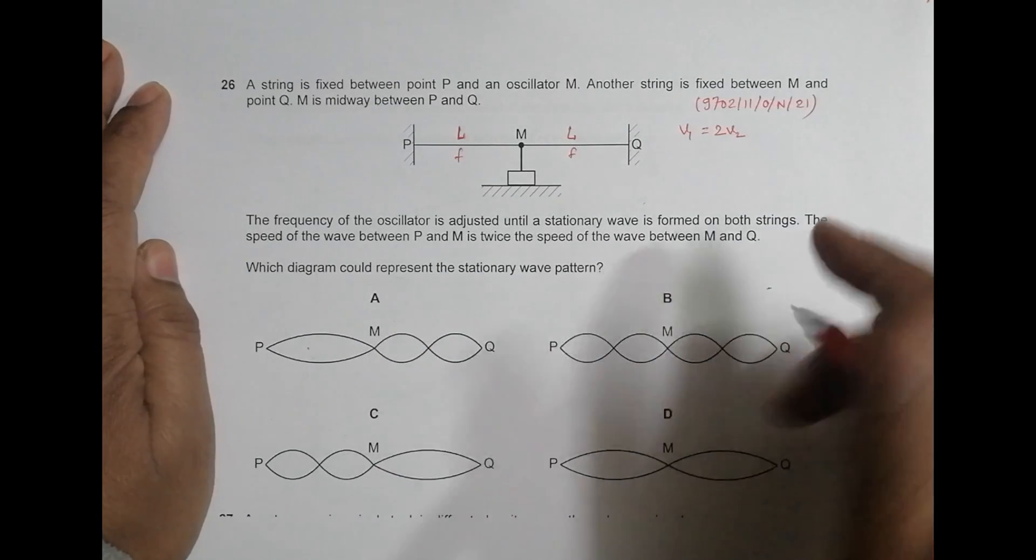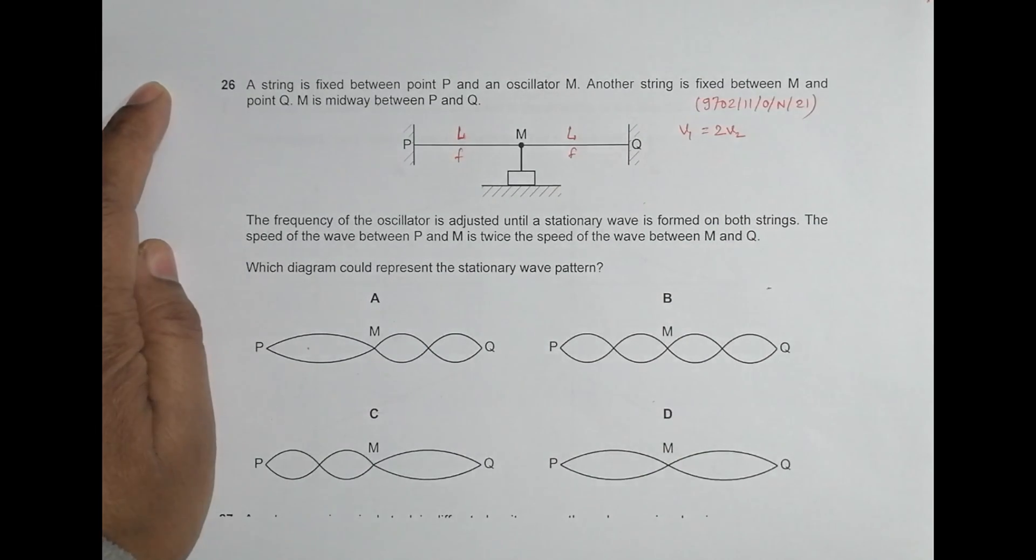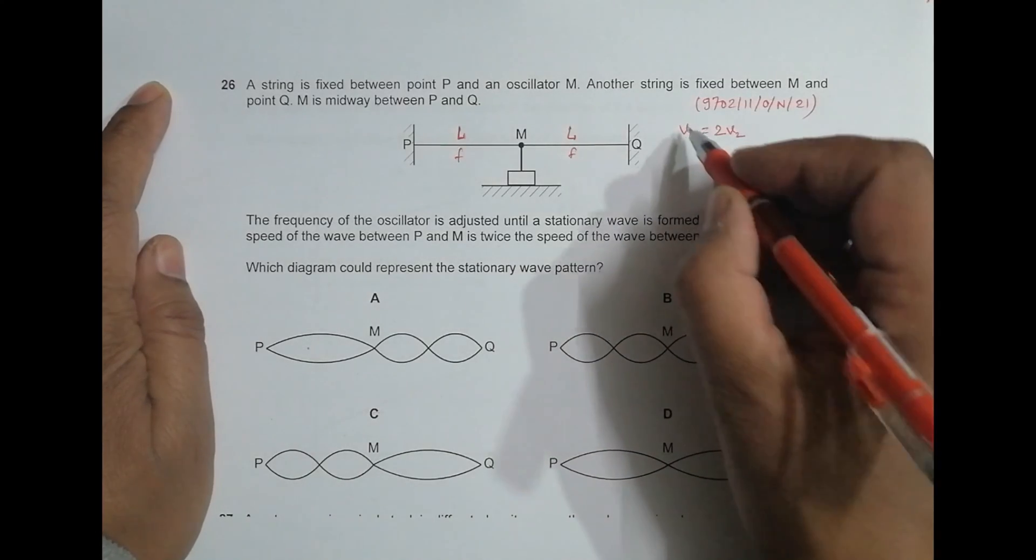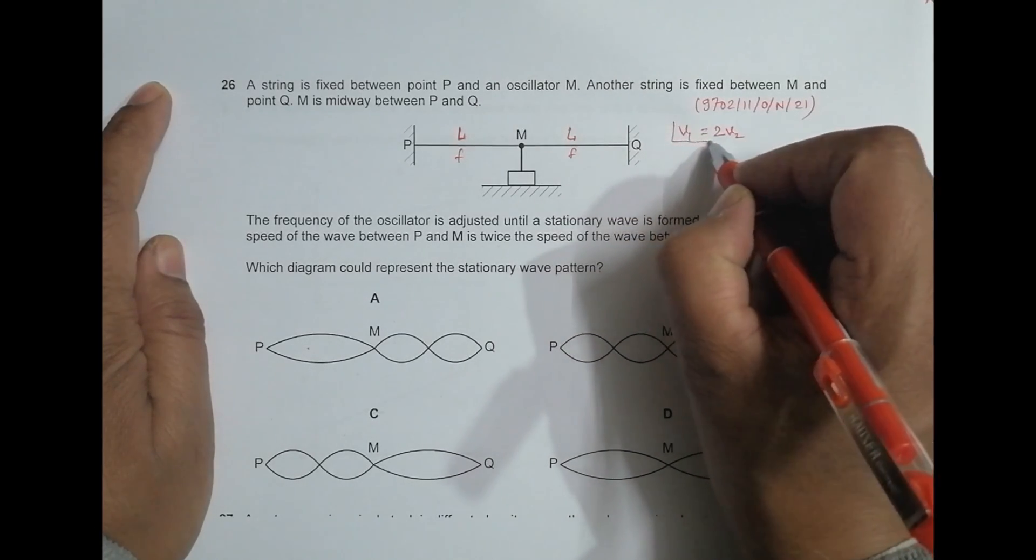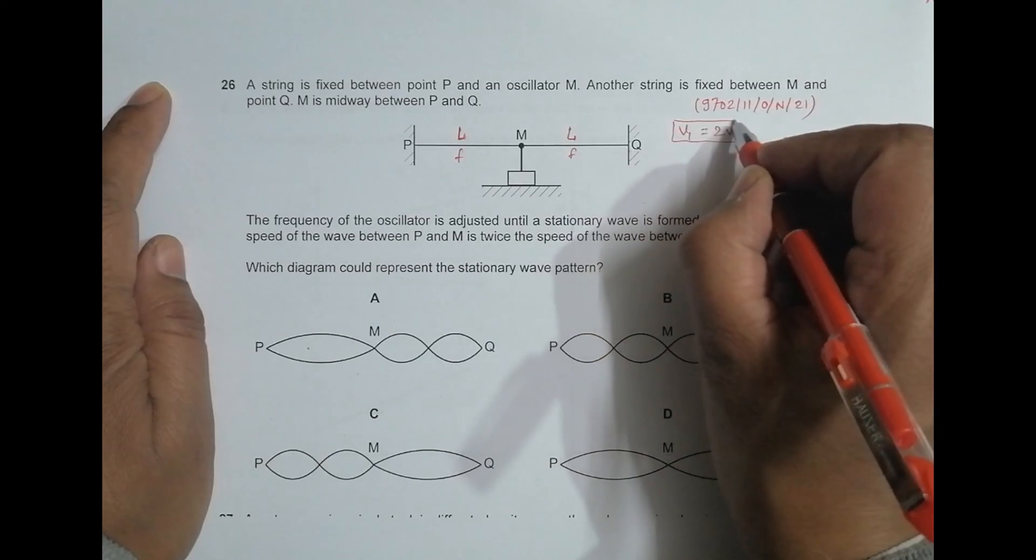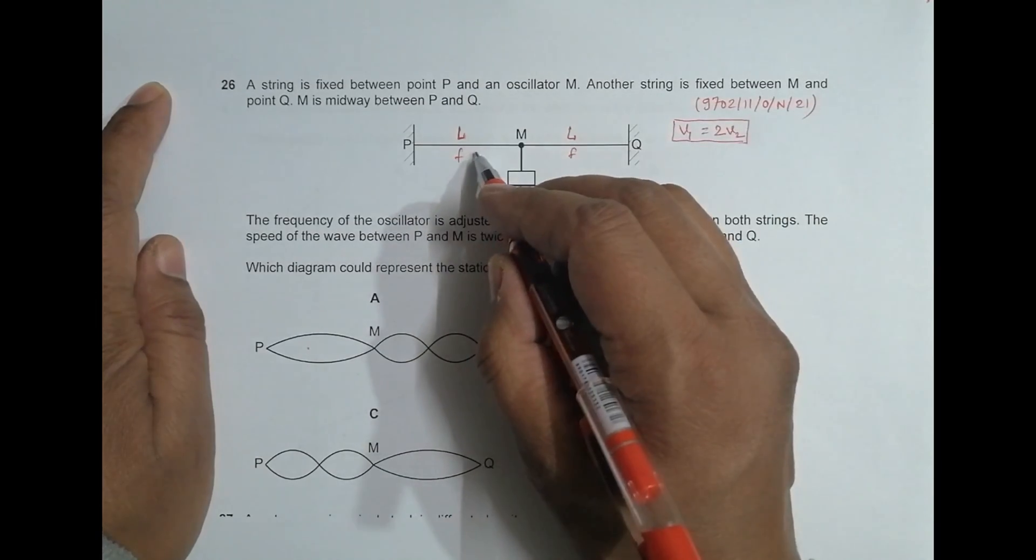Which diagram could represent the stationary wave pattern? We are given four patterns and need to decide which one would represent that phenomenon. Here the main thing to remember is V1 equals twice V2. The speed at the left is twice the speed at the right.